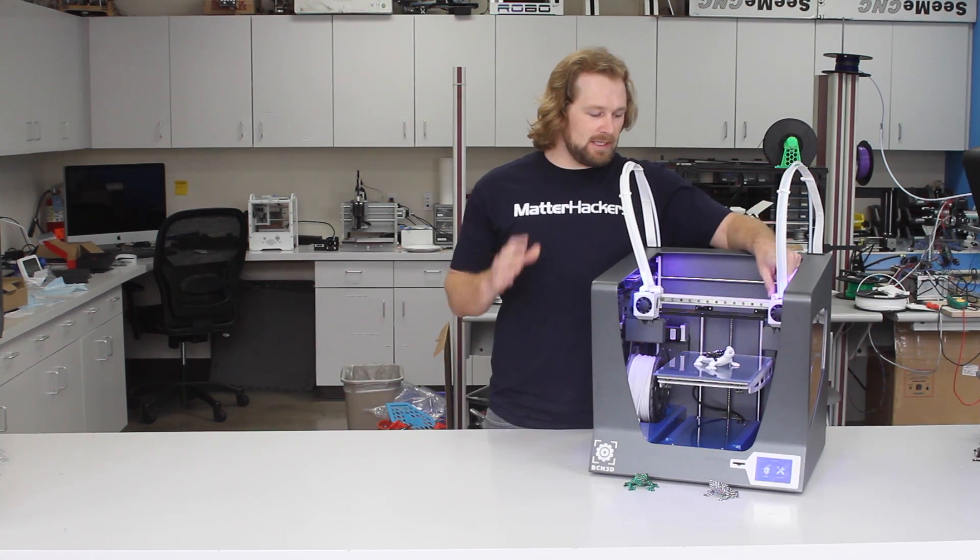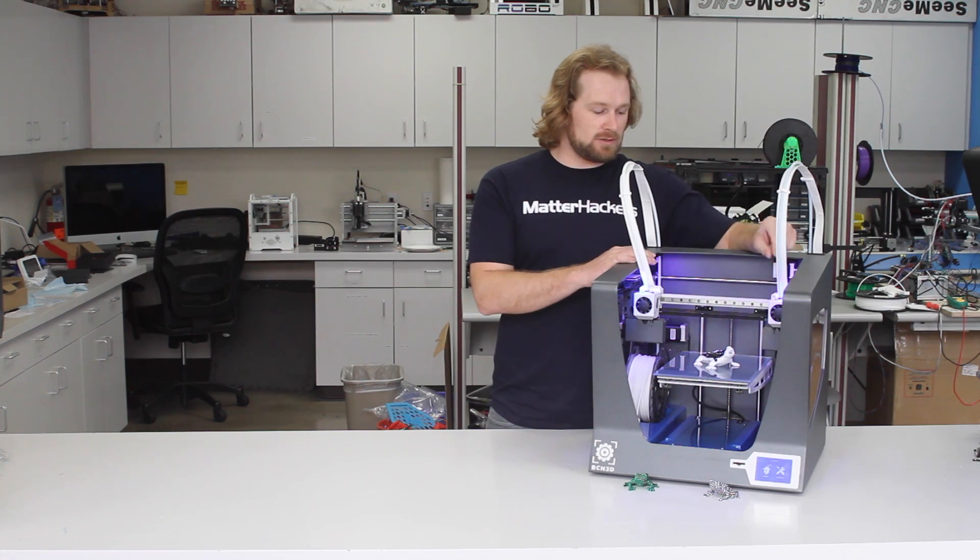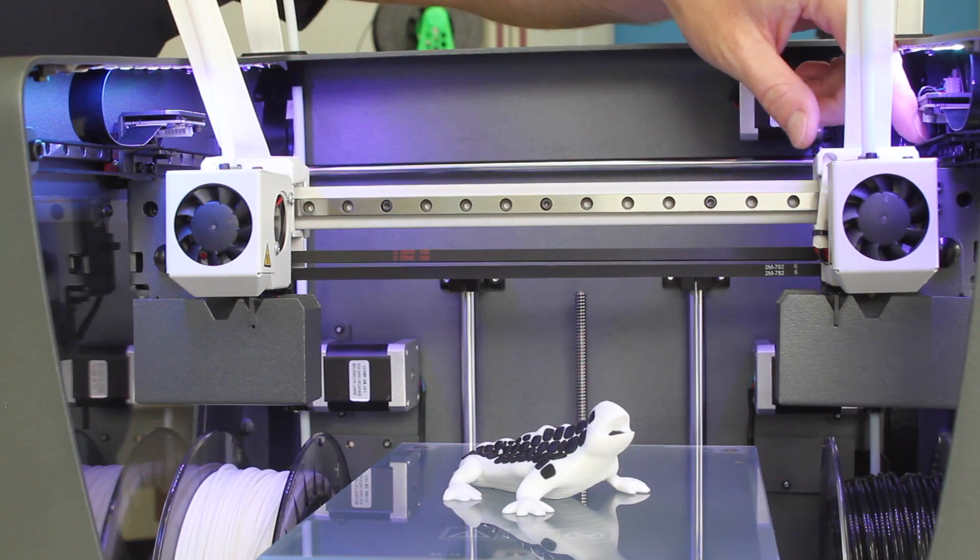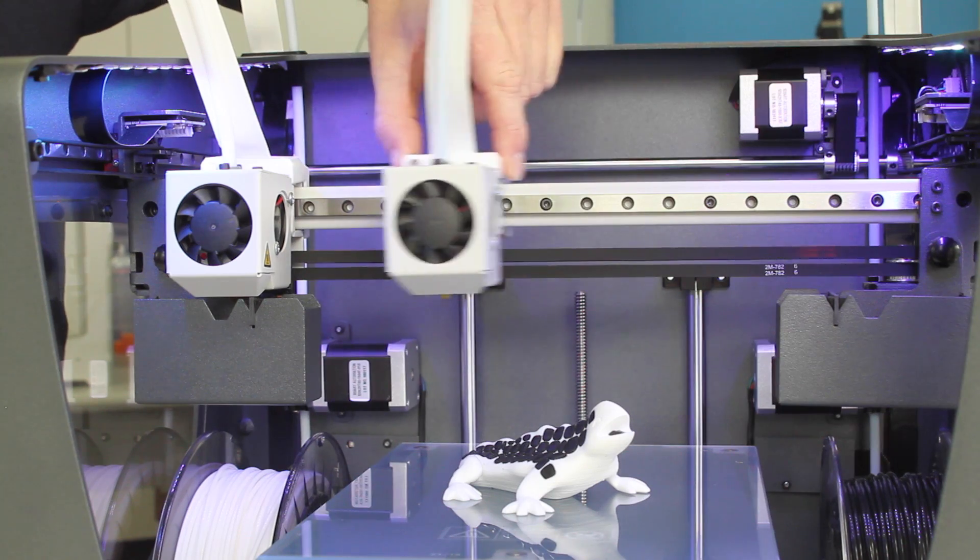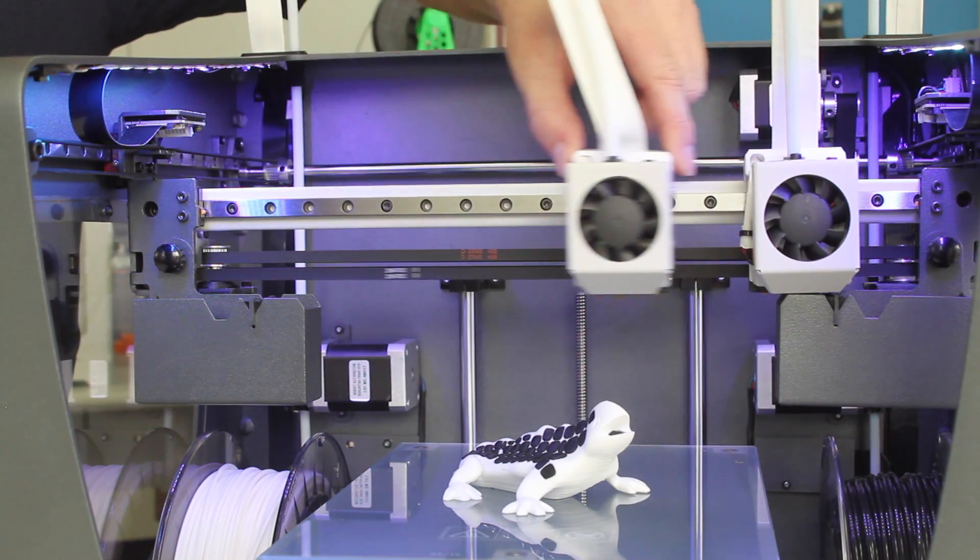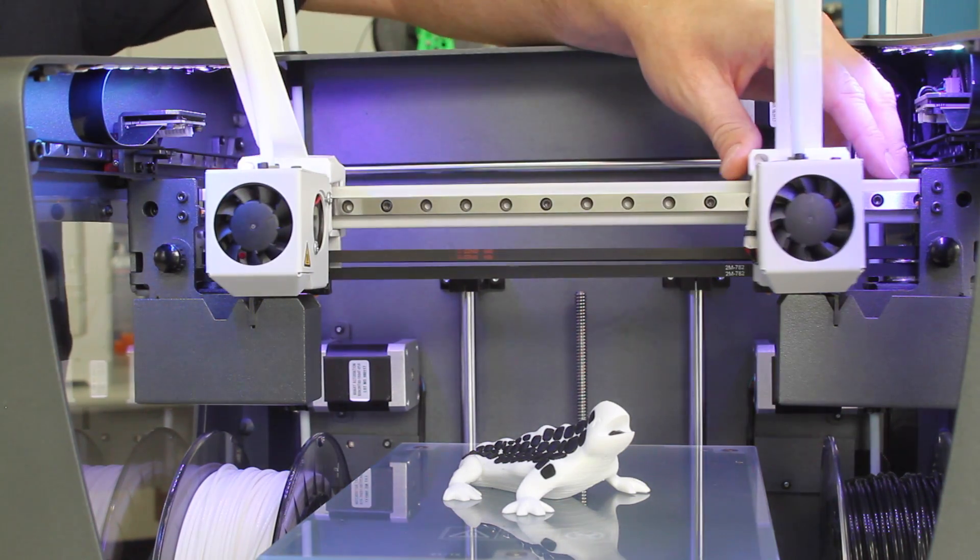Independent dual extrusion means that the two melting heads, the hot ends, are moved independently. So this one moves for one color, and then this one would move for another color. They move independently.